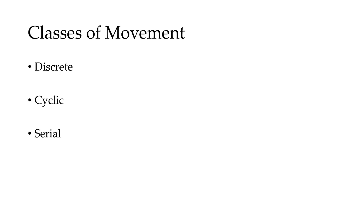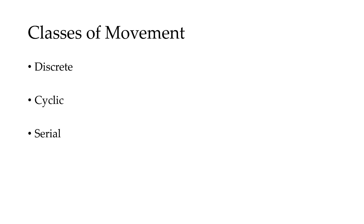Finally, we have a serial task. A serial task will chain together two or more discrete tasks, and a cyclic or a discrete task. An example of a serial task would be the triple jump in athletics. I'm going to ask you in your breakout rooms to give more examples of each class of movement.